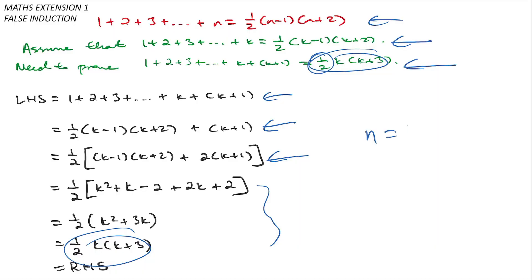But here is the problem. For example, if I sub in n equals 1, I'll get on the left I'll get 1 and on the right I will get 0. Well obviously that's not true.